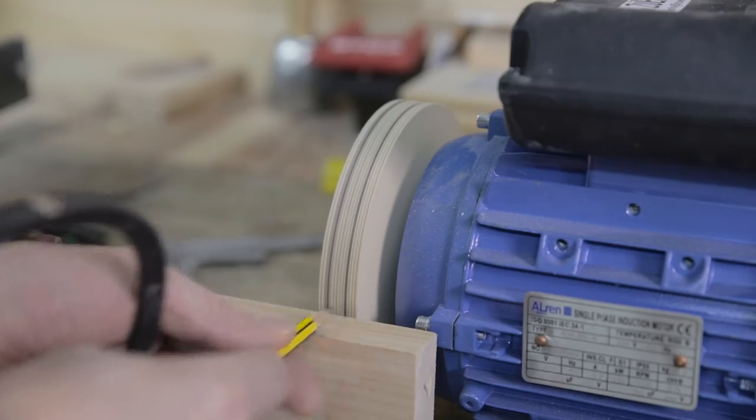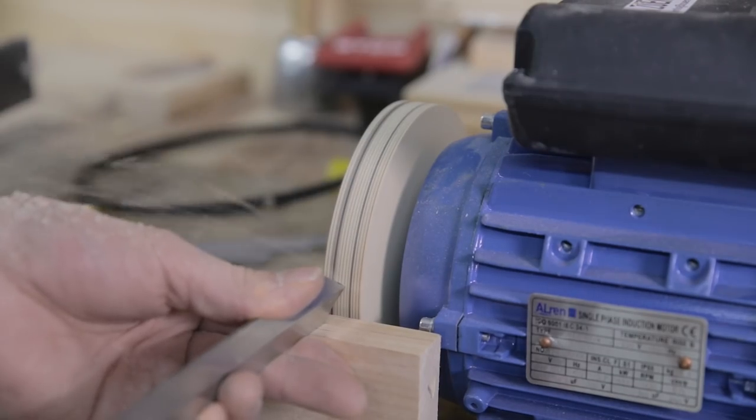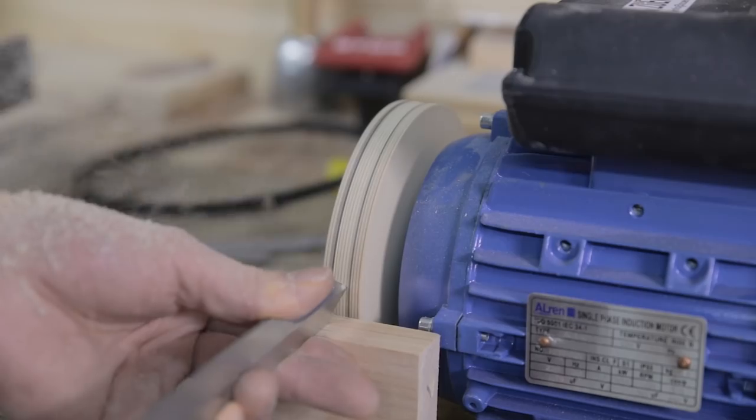I mark the rebate for the V-belt I'm going to use, and little by little I check to see if it fits in the rebate.